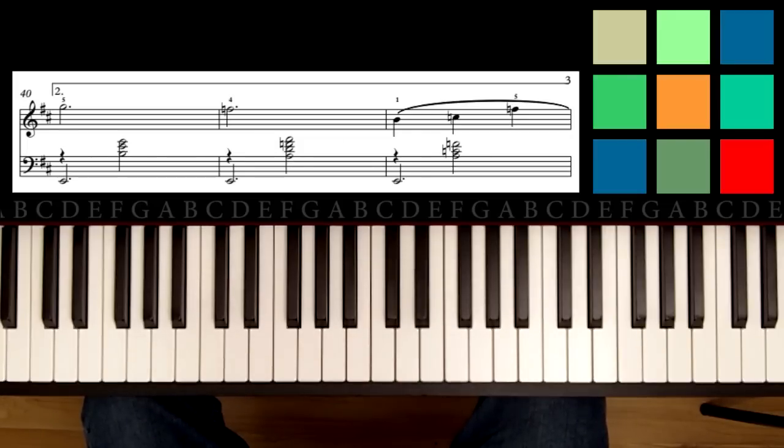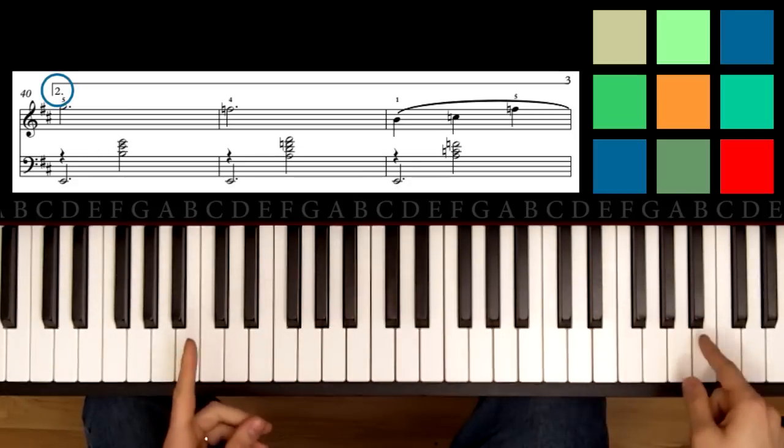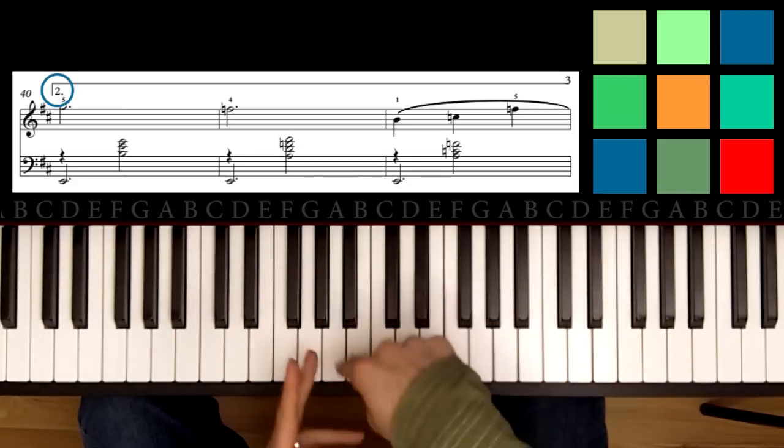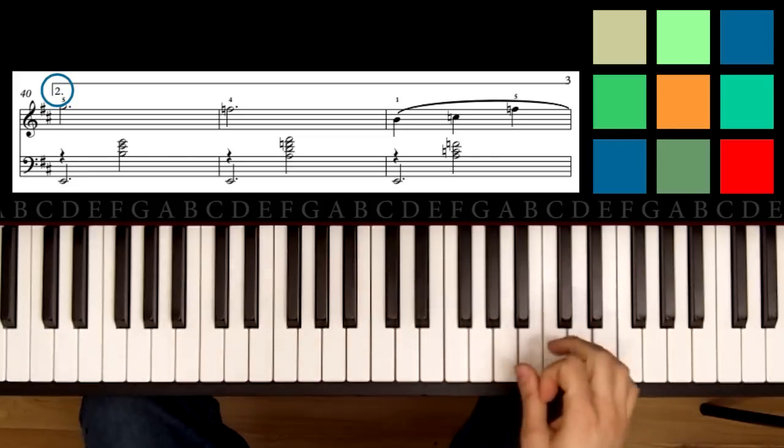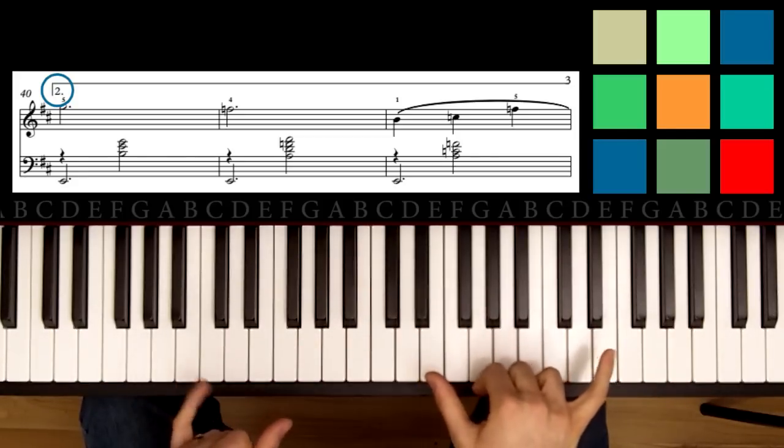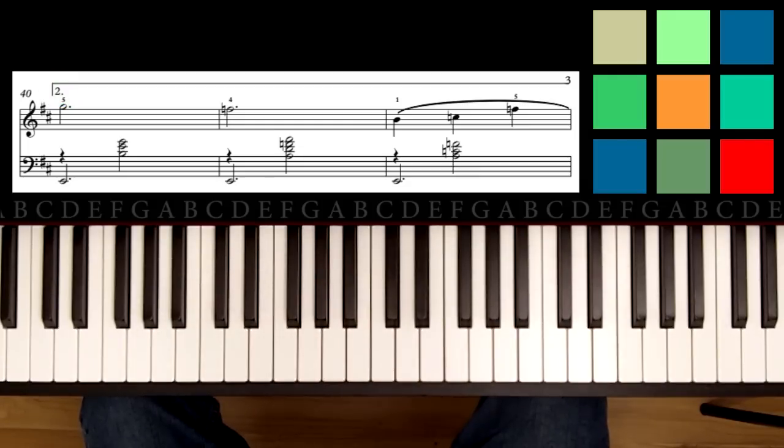The first thing I want to point out is that this is the second ending. You'll notice in the sheet music a bracket above the music that has the number 2. That tells you the second time you play through the music, instead of playing the part with bracket 1, you're going to play this instead. It's like the alternate ending, if you will.